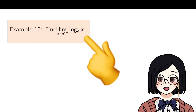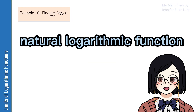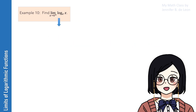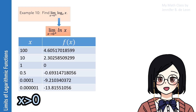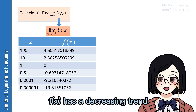What about if we are asked to find the limits of the logarithm of x to the base e as x approaches 0 from the right? We say that if the base is e, that is equivalent to the natural logarithm of x. Thus, we can also have the limits of ln x as x approaches 0 from the right. Now we list some values for x that are approaching 0, and we will see that the value of the function has a decreasing trend.